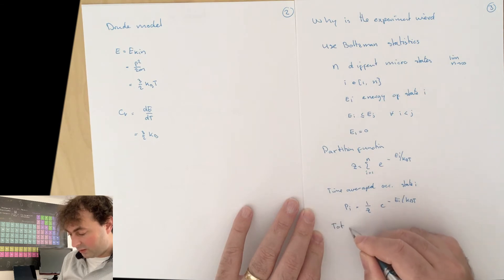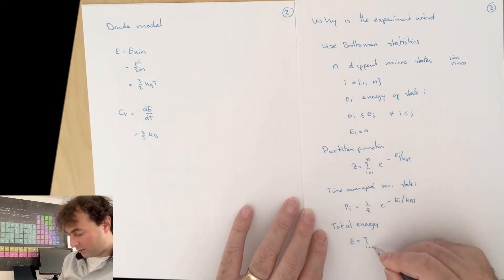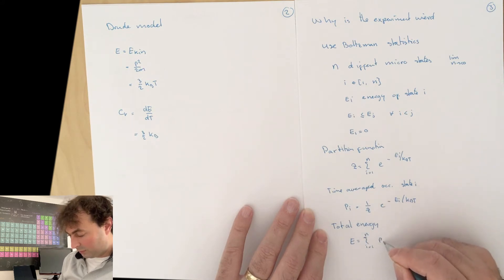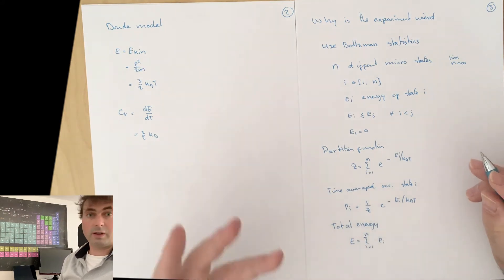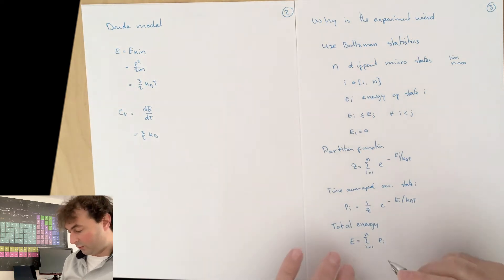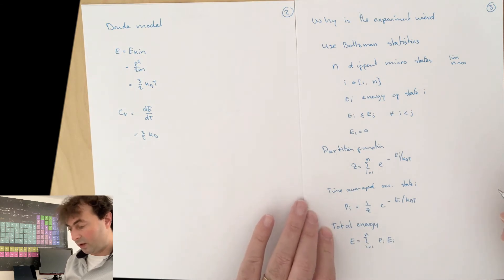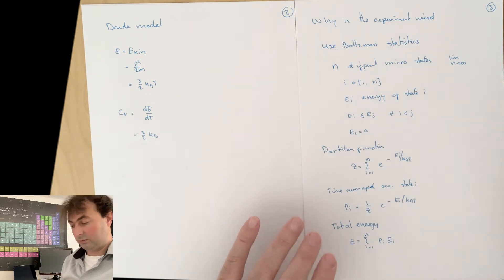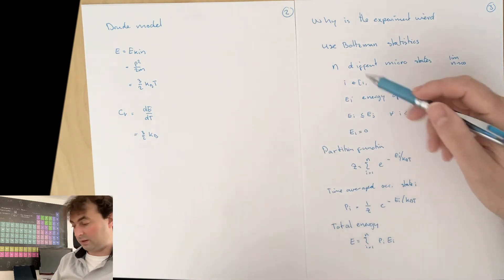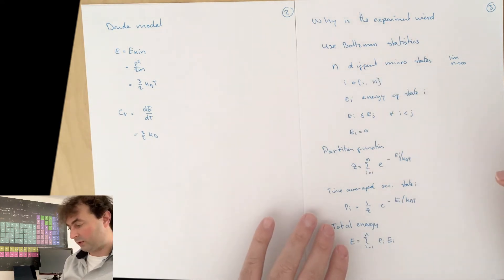We can calculate the total energy. It is the sum over all microstates, the probability to find your system in that microstate, averaged over all times, and then the energy of that microstate. We can do this classically or quantum mechanically, have exactly the same equations in both cases. Classically, it is the position and the momenta of your electrons. Quantum mechanically, these are the different wave functions.